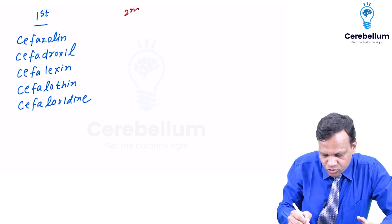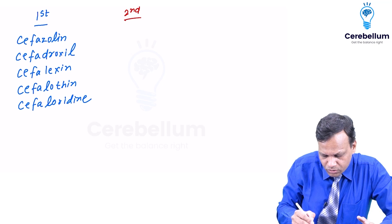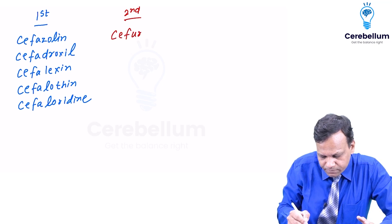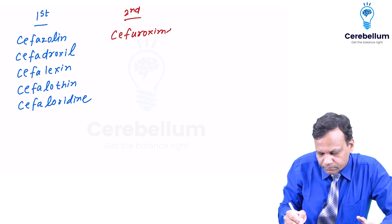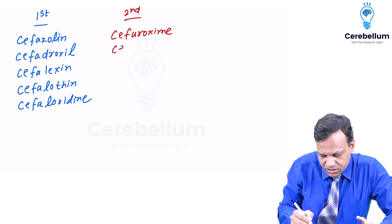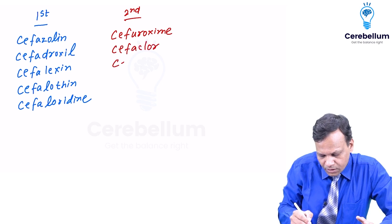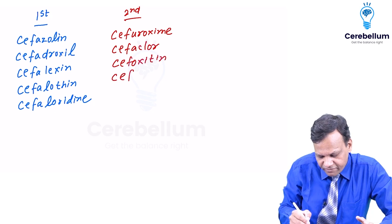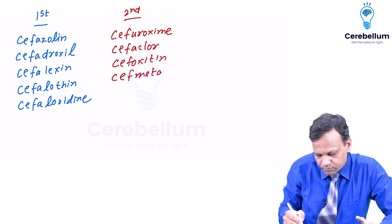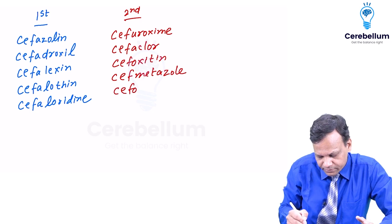Second generation cephalosporins include cefuroxime, cefaclor, cefoxitin, cefmetazole, and cefotetan.